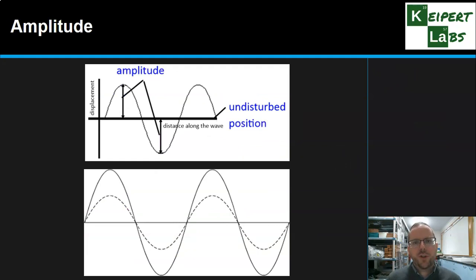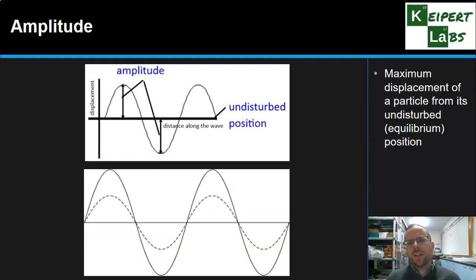So the first one is amplitude. Amplitude, the scientific definition we're talking about here, is the maximum displacement, that is the straight line shortest distance, of a particle from its undisturbed or equilibrium position. So if we think about our wave here, the undisturbed or equilibrium position is that line through the middle. The amplitude is the maximum height, or maximum distance away from that middle position.